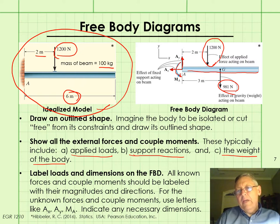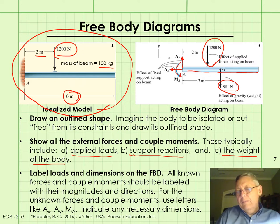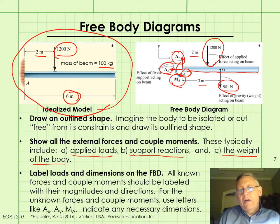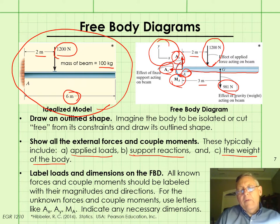Now we label everything: all our loads and any necessary dimensions. We show known magnitudes of loads and weights and their directions, and we label any unknown forces or moments. Here at point A, we call the unknown forces A_x, A_y, and the moment about A. We also need to establish our reference axes or coordinate system. Most problems use the standard XY reference, but not always — you still need to show it for a complete free body diagram.